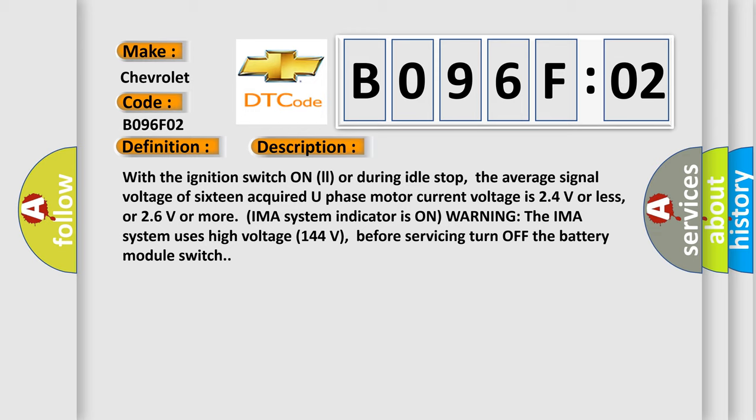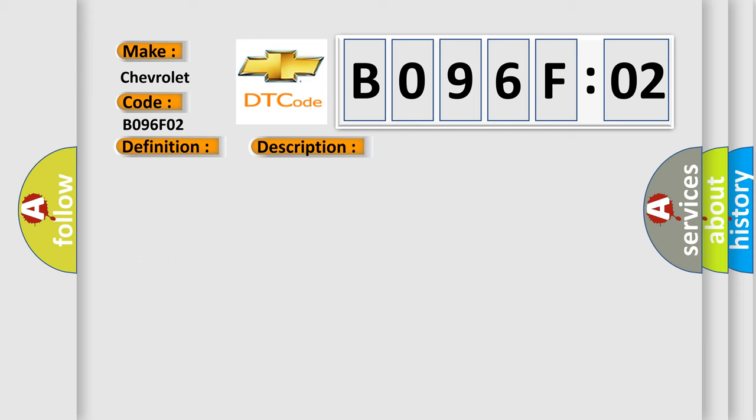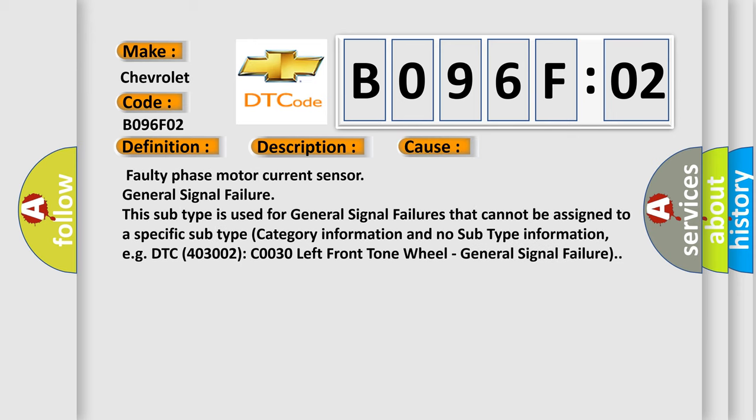This diagnostic error occurs most often in these cases: Faulty phase motor current sensor general signal failure. This subtype is used for general signal failures that cannot be assigned to a specific subtype category information and no subtype information.